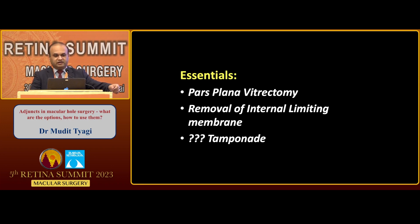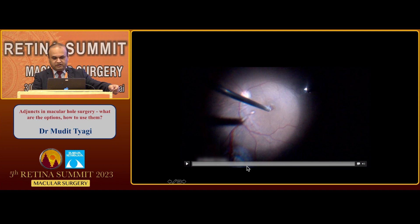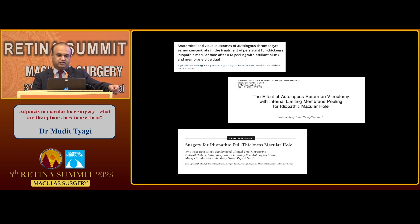So we come to what are the adjuncts we can use. The adjuncts predominantly which have been described are autologous serum, viscoelastics, and something which we have been working upon a lot — fibrin glue. Autologous serum was said to contain growth factors that help in earlier closure of these holes. Studies essentially show that anatomical and visual outcomes where autologous serum was used or not do not have much of a difference — so it kind of rules out autologous serum.